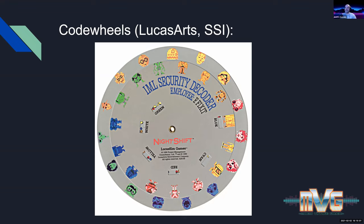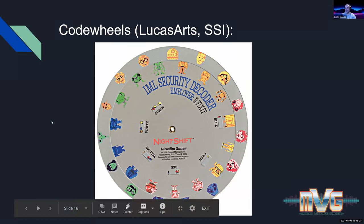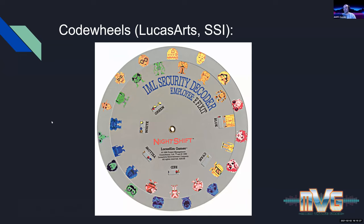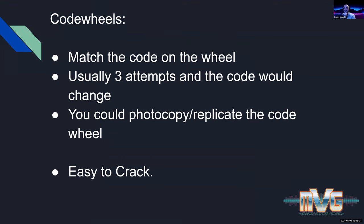Code wheels were another early form of copy protection. When the game loaded it would show a couple of characters, and you'd line them up on the wheel and type out whatever was in the boxes. It was pretty pointless though, because you could just photocopy or replicate the code wheel, or write all the combinations in a spreadsheet. It would stop casual copying but was very easy to crack at the end of the day.